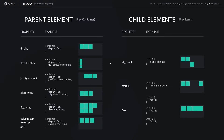Flexbox, together with CSS Grid, is one of the most important CSS layout modules. In my experience I actually use Flexbox even more than CSS Grid, so you could say this is the most important layout module in CSS. With Flexbox it's always about a parent element, which we call the FlexContainer, and its direct child elements, which we call the FlexItems.